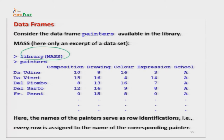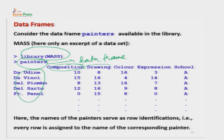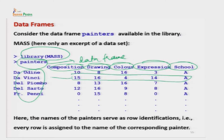हम MASS library का इस्तेमाल करते हुए painters dataset को use करेंगे, जो पिछले lecture में use किया था। इस painters नाम के data frame के अंदर बहुत सारे painters के बारे में information दी गई है - उनके नाम, और उनकी painting से related variables जैसे composition, drawing, color, expression, school इत्यादि। हर एक row एक particular painter के बारे में information देती है, जैसे दूसरी row में da Vinci के बारे में information है।